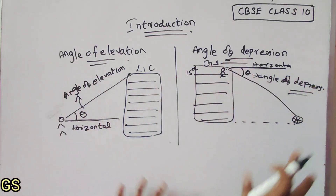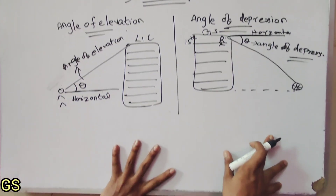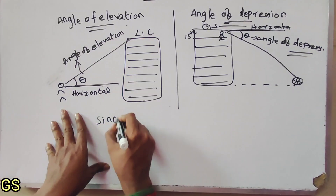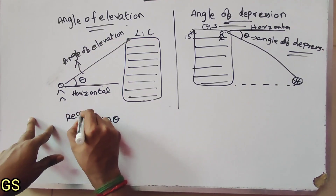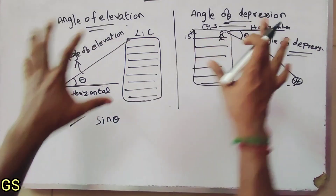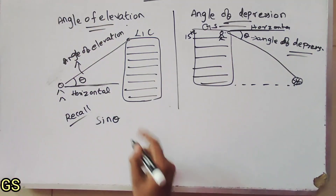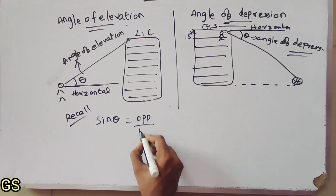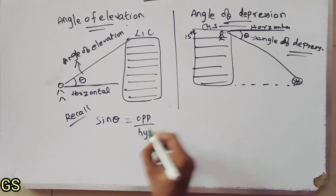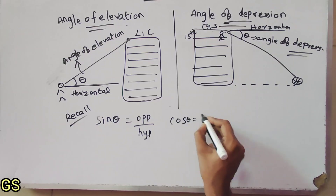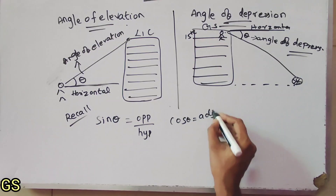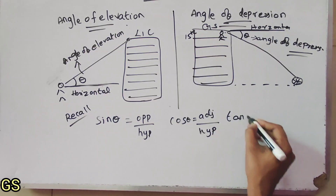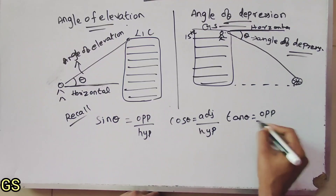We have two concepts and some basic recall. If we know these two, it's done. Sin theta is opposite side by hypotenuse. Cos theta is adjacent side by hypotenuse. Tan theta is opposite side by adjacent.